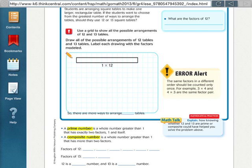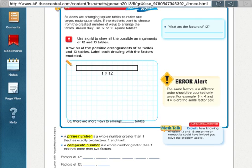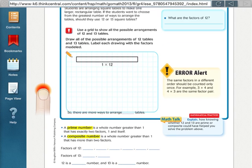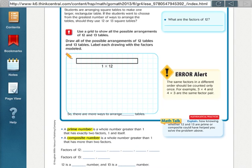So what prime means is that number can only be, you can only have one and that number multiplied together to get that number. For example, the number 13, if I were to list out all of the factors for 13, the only ones that I could come out with are 1 and 13. I can't do 2 times anything, 3 times anything, 4 times anything, 5 times anything, and so on. The only two factors that give me the product of 13 are 1 and itself. That means that 13 is a prime number.